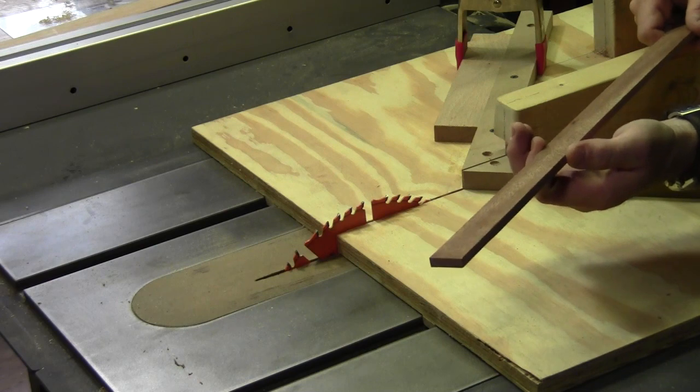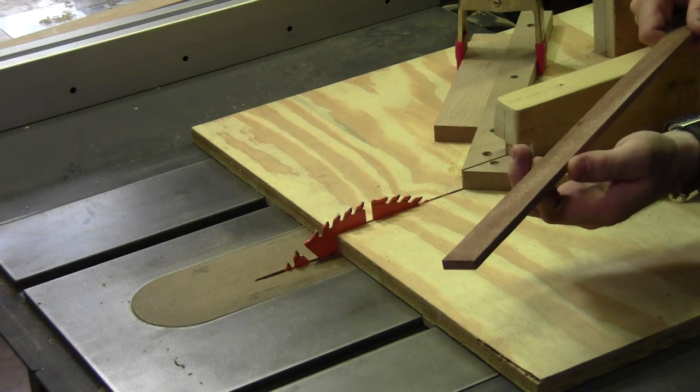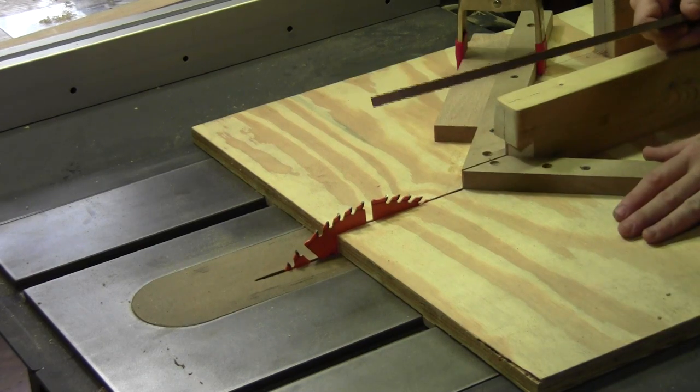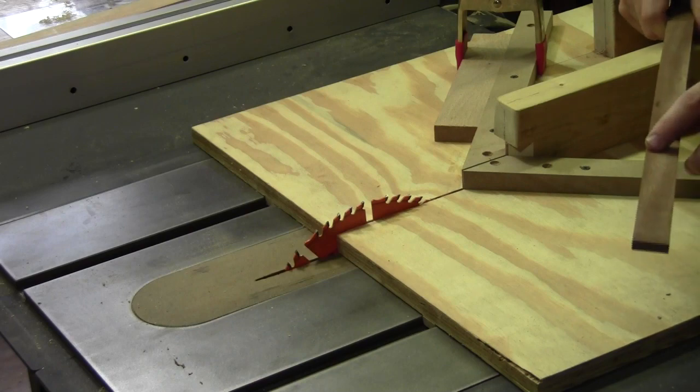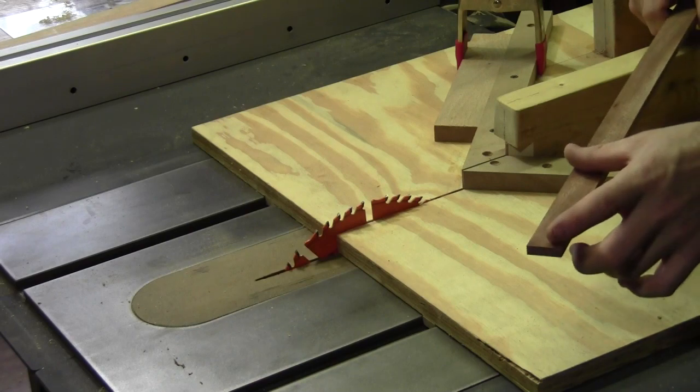Now that I've got the mahogany strips ripped down to one inch wide, I set up the miter sled on the table saw and I put a stop block up so that my pieces are four and three quarter inches from the long point to the long point on each piece that I cut.